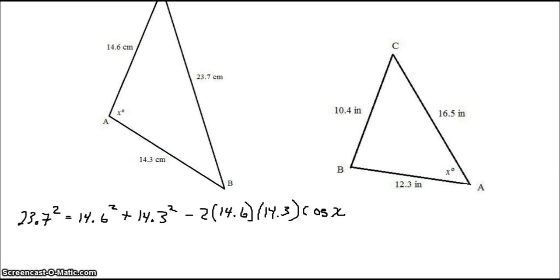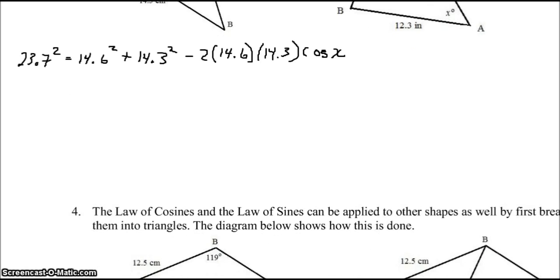Now we're looking for cosine of X. So we need to solve for it. With a little bit of algebra, we're subtracting the 14.6 squared from both sides, subtracting 14.3 squared, then dividing by negative 2 times 14.6 times 14.3, that will give us cosine of X.